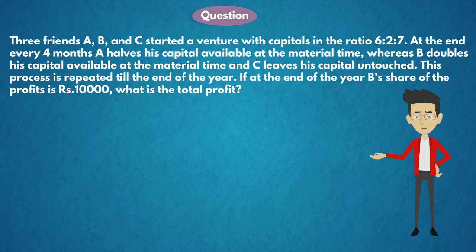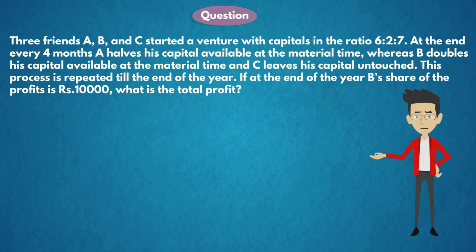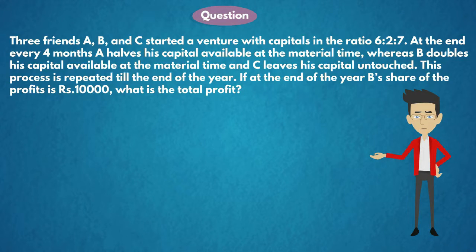Three friends A, B and C started a venture with capitals in the ratio 6:2:7. At the end of every 4 months, A halves his capital available at the material time, whereas B doubles his capital available at the material time, and C leaves his capital untouched. This process is repeated till the end of the year. If at the end of the year B's share of the profits is Rs. 10,000, what is the total profit?